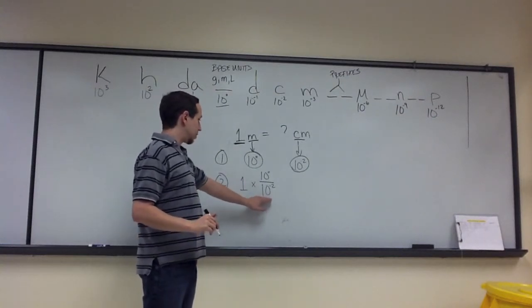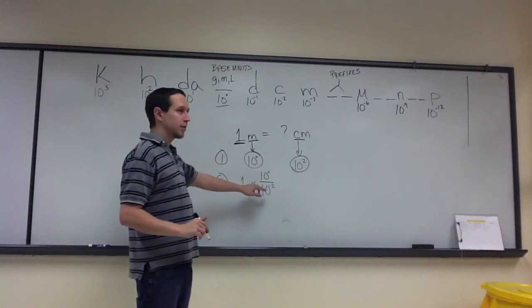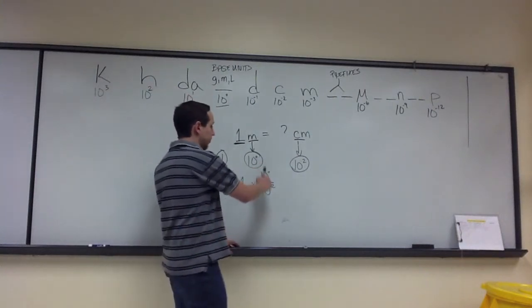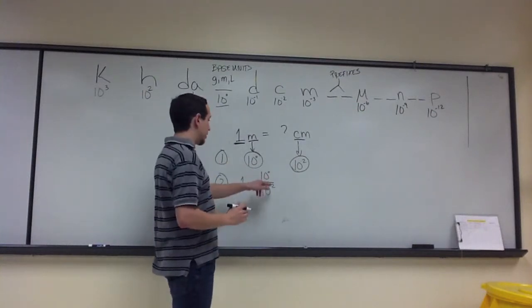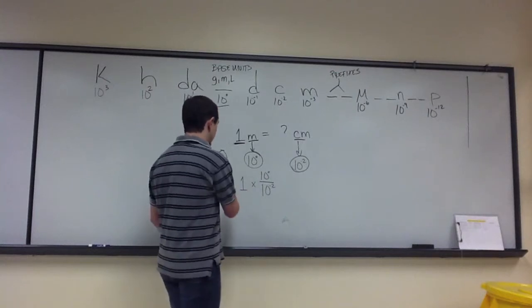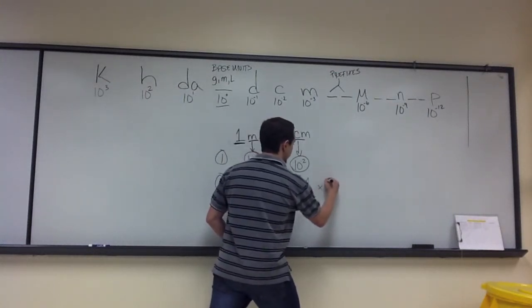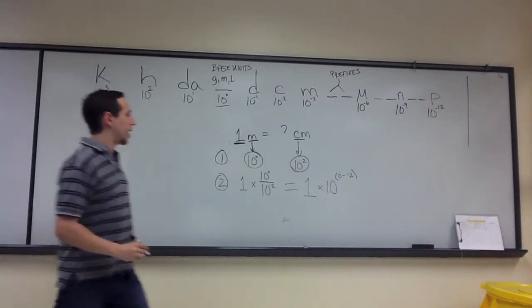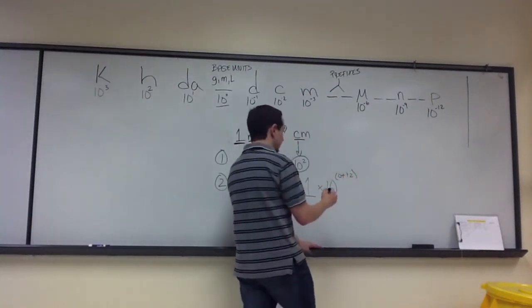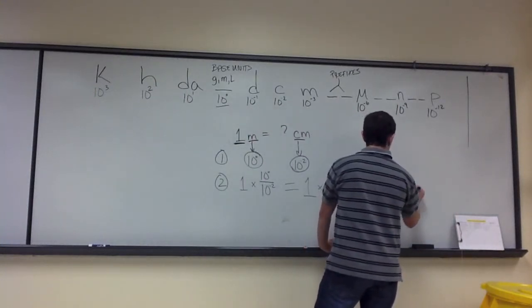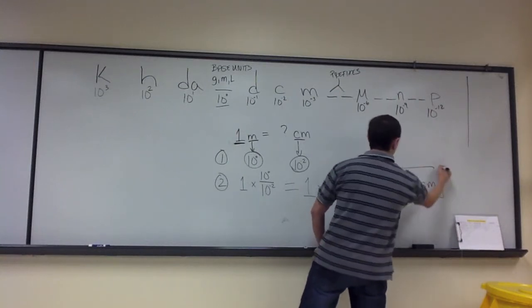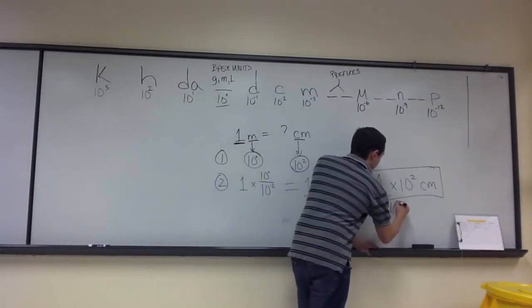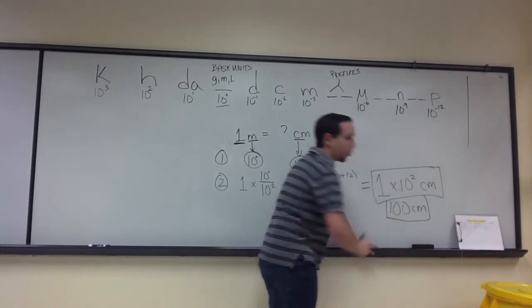Okay? So, now what I need to do is I need to simplify this. So, I'm dividing two bases that have the same base, but different exponents. And a law of exponents states that whenever we're dividing exponents with similar bases, we can simply subtract the exponent of the denominator from the exponent of the numerator. So, this is going to actually be equal to 1 times 10 to the zero minus the negative two. Anytime you subtract a negative, it becomes a positive. So, my final answer is going to be 1 times 10 squared centimeters. And you hopefully remember that 10 squared is equal to 100. So, that gives me the answer of 100 centimeters.